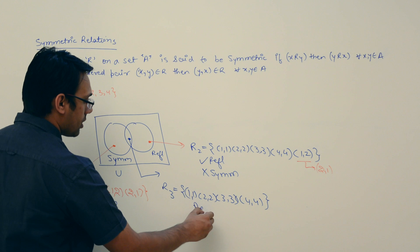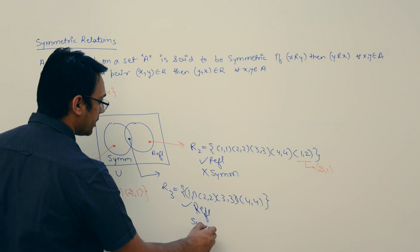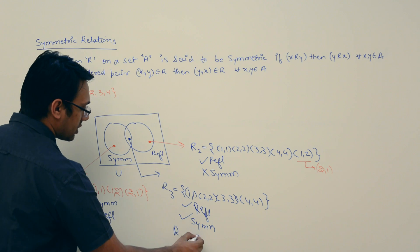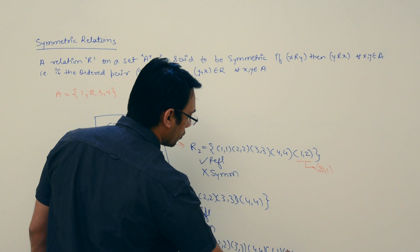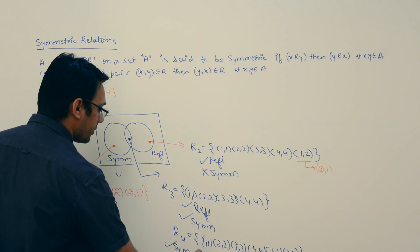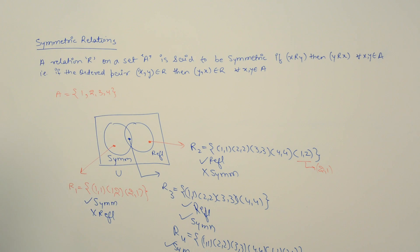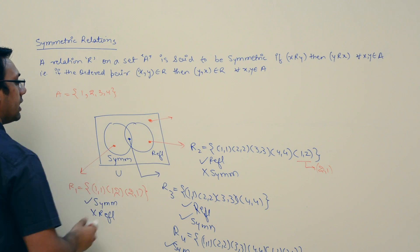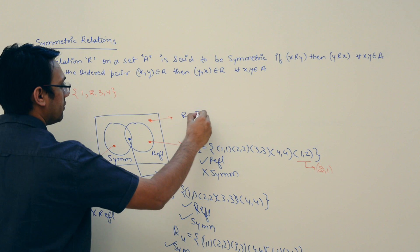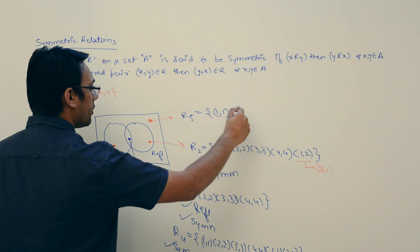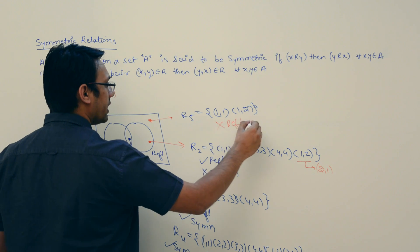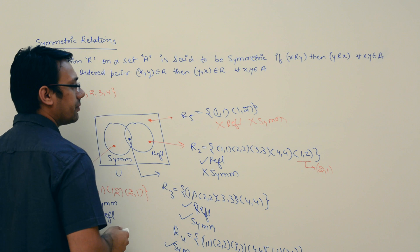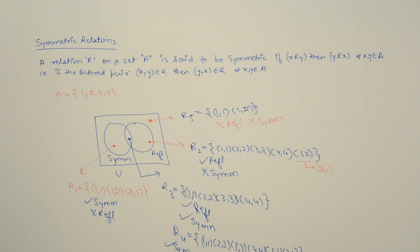Another example of reflexive and symmetric: R4 = {(1,1), (2,2), (3,3), (4,4), (1,2), (2,1)} is reflexive as well as symmetric. We can also give an example of a relation that is neither reflexive nor symmetric: R5 = {(1,1), (1,2)} is not reflexive and not symmetric, because it doesn't have (2,1). This is the relationship between symmetric and reflexive relations.